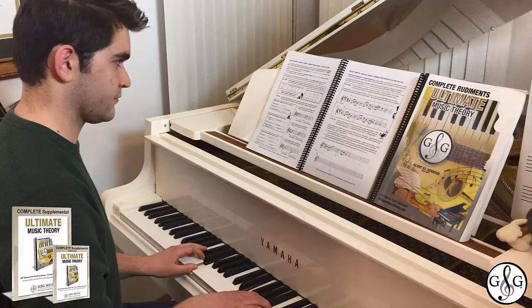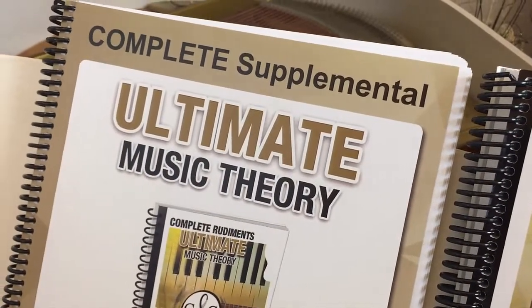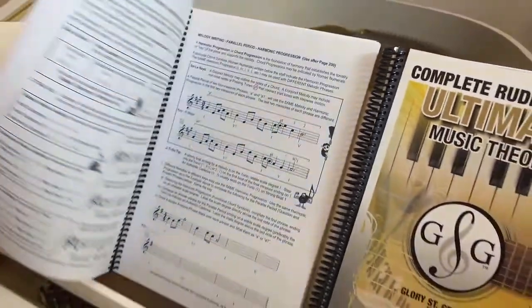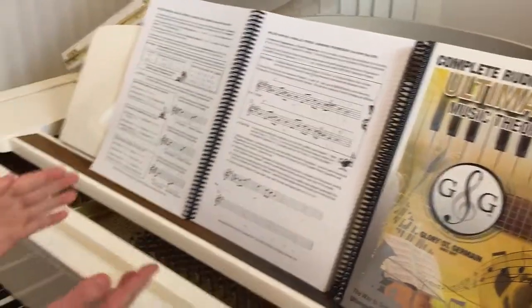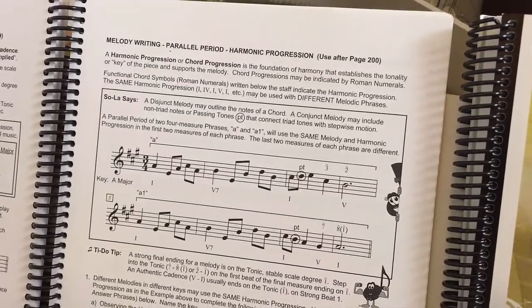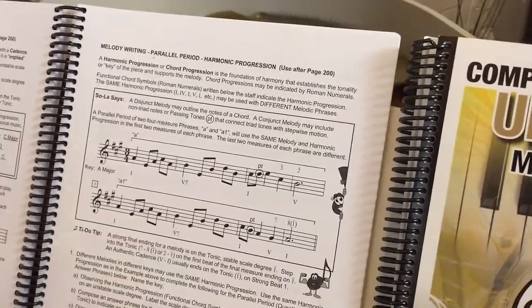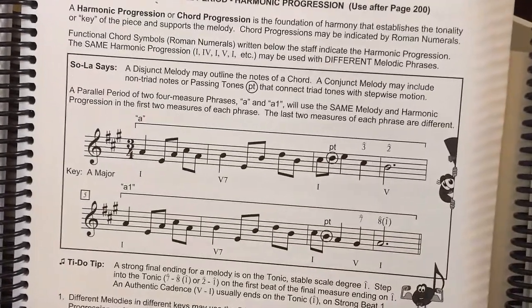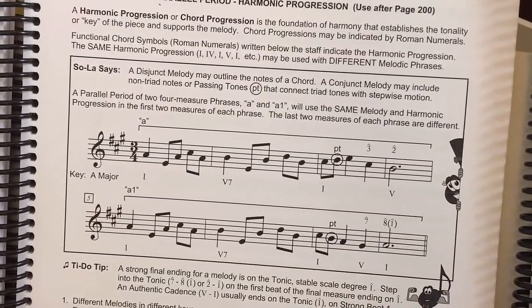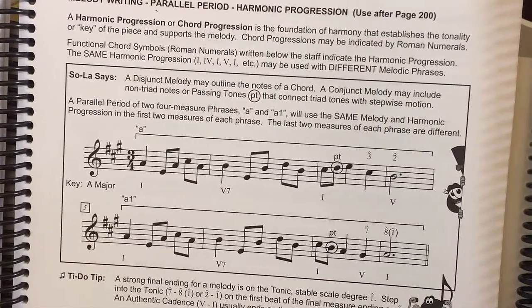In the example box, the parallel period contains both the V chord and the V7 chord. Listen as Carter explores the master techniques for melody writing on page 103. We're in the Complete Supplemental Workbook now. Sola says: a disjunct melody may outline the notes of a chord; a conjunct melody may include non-triad notes or passing tones (labeled PT) that connect triad tones with stepwise motion.